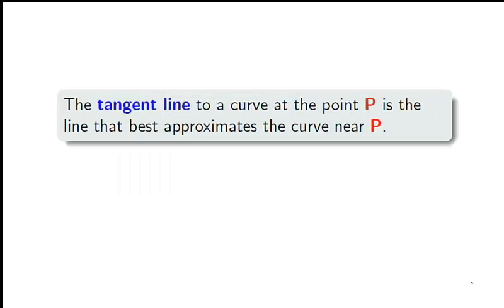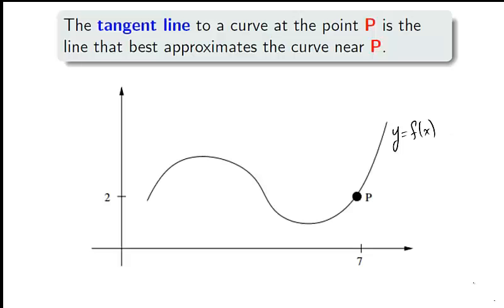As we'll soon discover, tangent lines are fundamental to the concept of derivatives. The tangent line to a curve at a point is the line that best approximates the curve near that point. But what does this definition mean? The graph of f doesn't look much like a line.